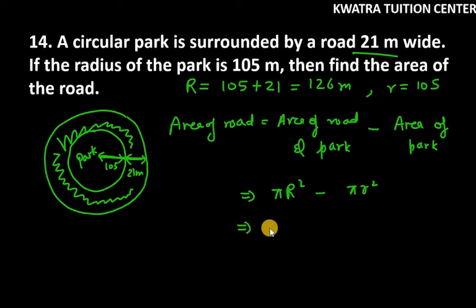So pi. We can take pi common. We have R square. So this is 126 square minus small r square which is 105 square.